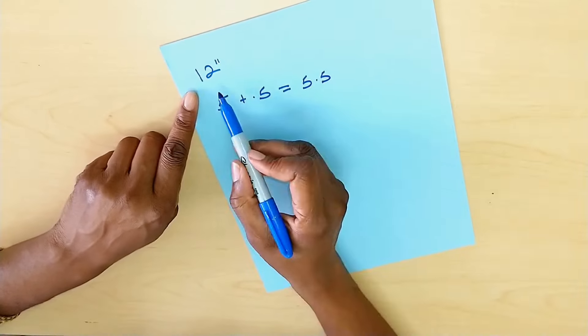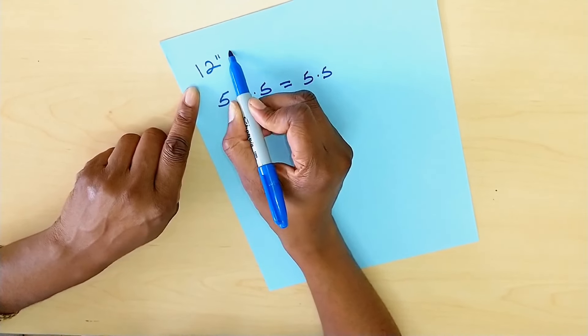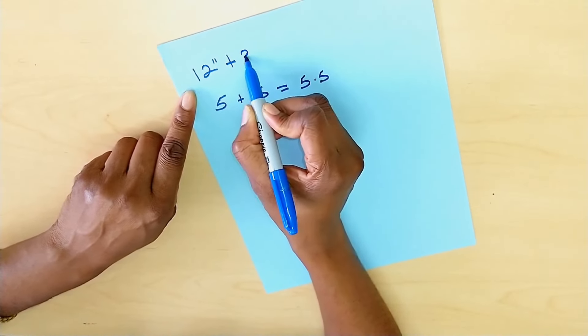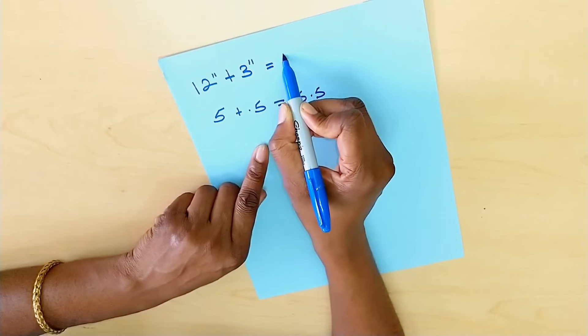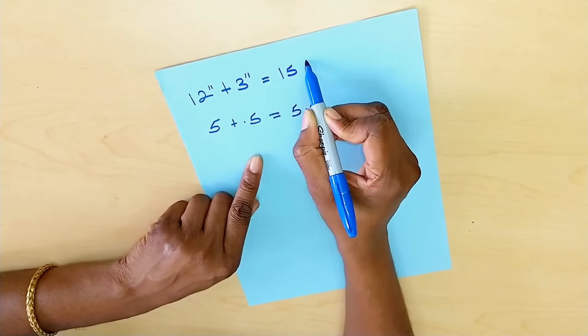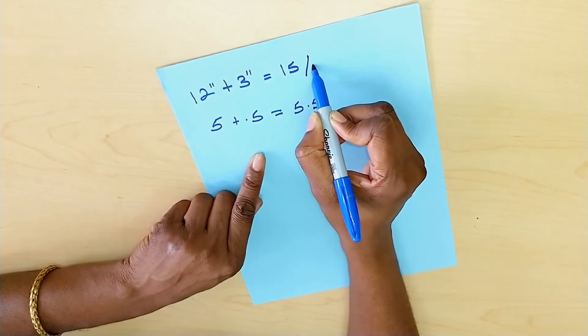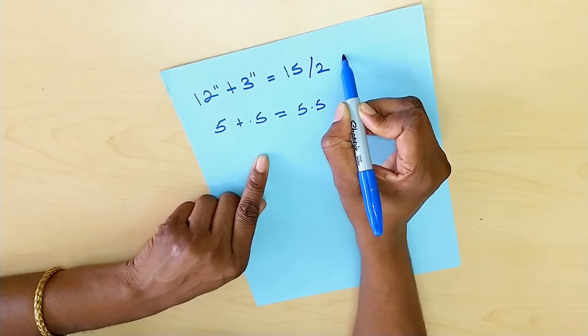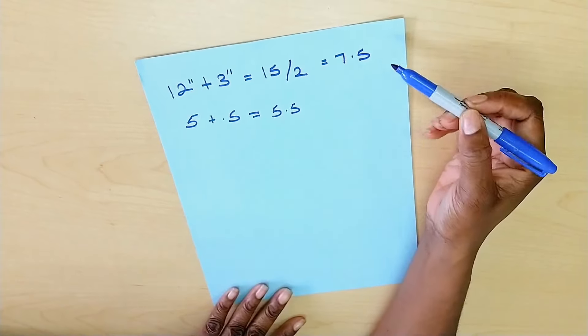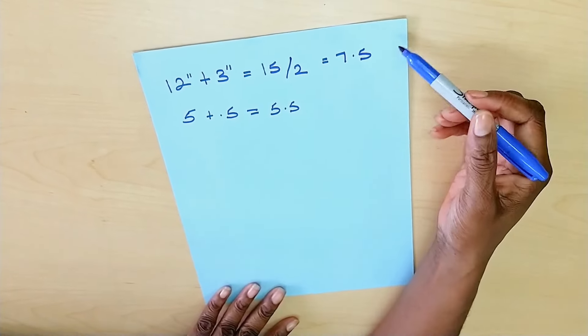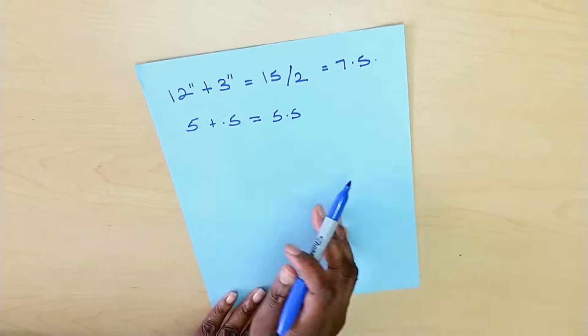For my upper arm measurement I am going to add three inches which would serve as my sewing allowance. That brings us to 15, and that number you would divide by two which would give us 7.5. So the measurements we are going to use for this are 7.5 and 5.5.